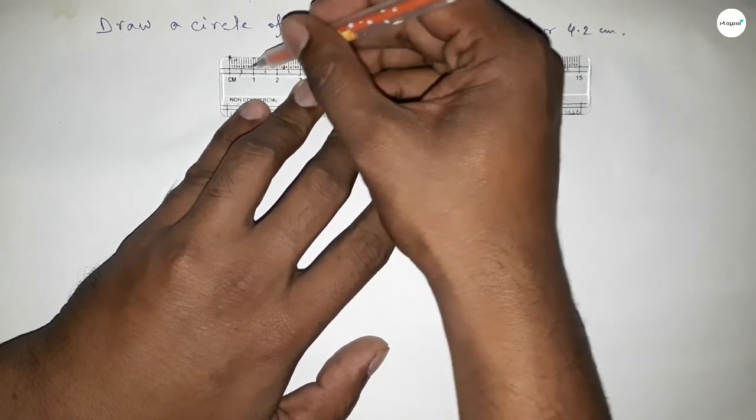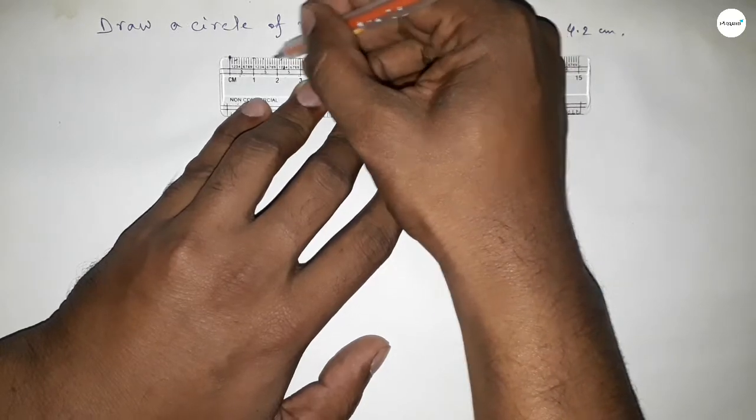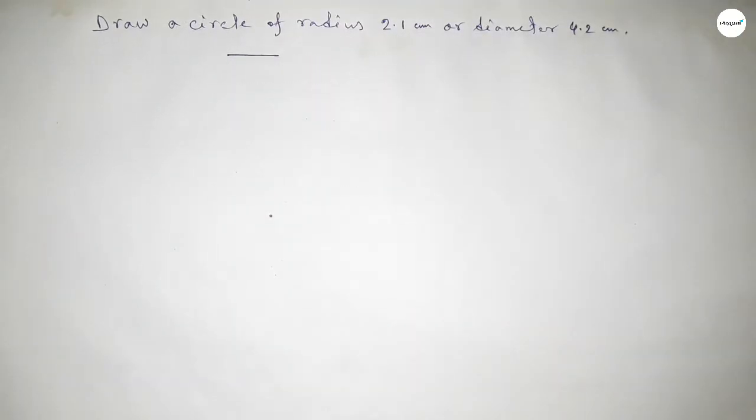So this is 0, 1, 2, and this is 2.1. We know that the radius of a circle equals half of the diameter.